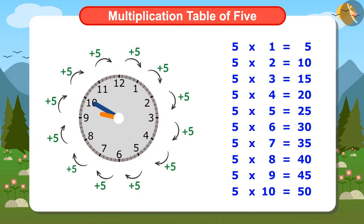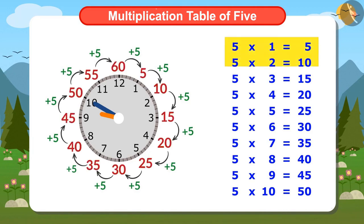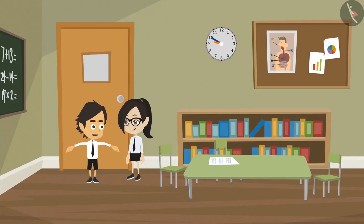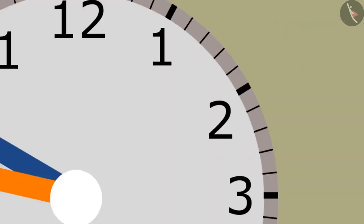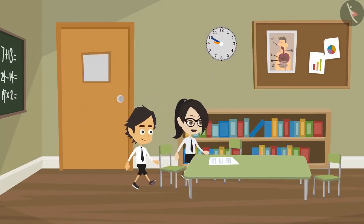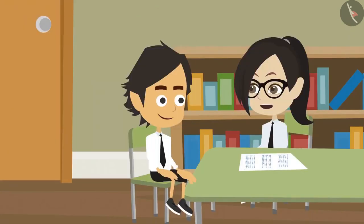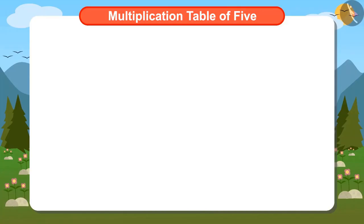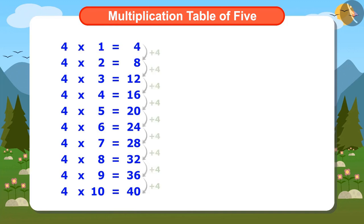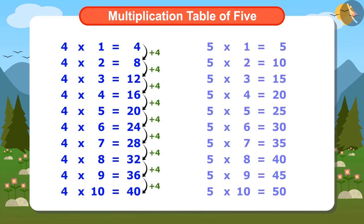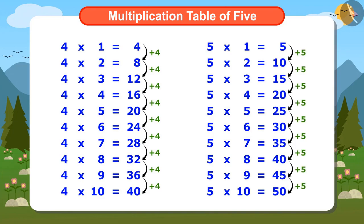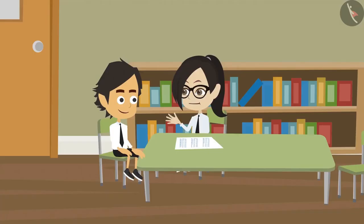Now you can also use the Multiplication Table of 5 to read the minutes — you do not have to count them one by one. But how do you write the Multiplication Table of 5? The Multiplication Table of 4 is written by adding 4 repeatedly. In the same way, the Multiplication Table of 5 is written by adding 5 repeatedly.